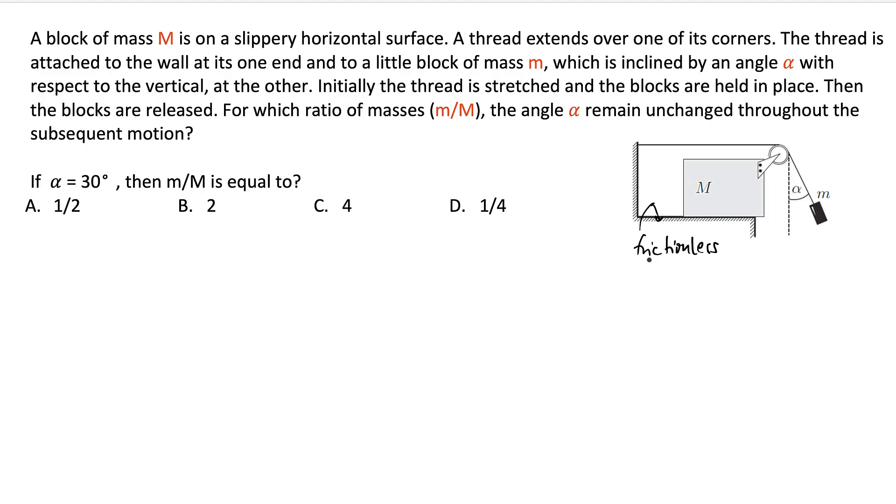A thread extends over one of its corners. The thread is attached to the wall here at its one end and to a little block of mass m on the other side. And this block m is inclined at angle alpha with the vertical.